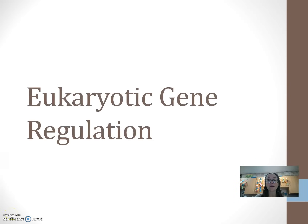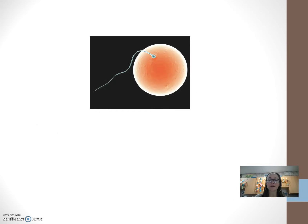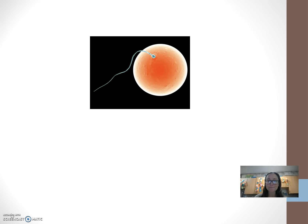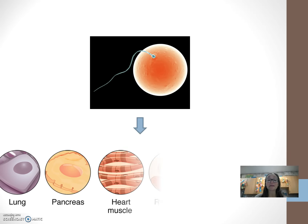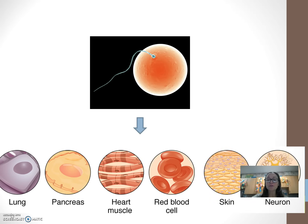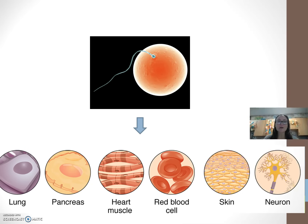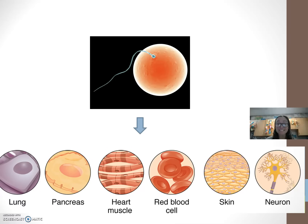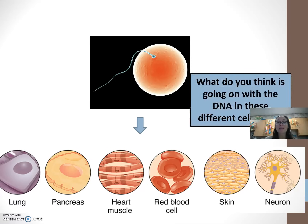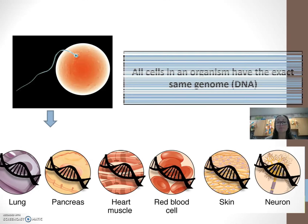Here we're looking at eukaryotic gene regulation. When we start out as organisms, we start from a sperm and an egg, and together this gives us our entire genome. The cool thing is that we start out as one cell, and yet as adults we are made of 200 different kinds of cells. So how did we get from one cell to 200 different kinds if all of these cells have the exact same genome?